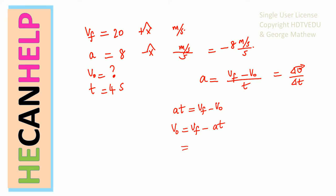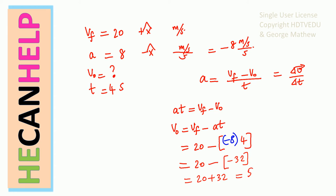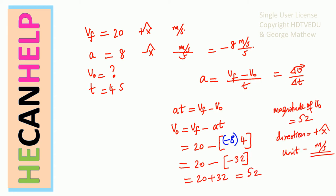Substitute the numbers that we know. v final is positive 20 minus acceleration times time. Acceleration is negative 8, and time is 4 seconds. So this is 20 minus negative 32, which is 20 plus 32. So the initial velocity is 52. What is the magnitude? 52. Makes sense.